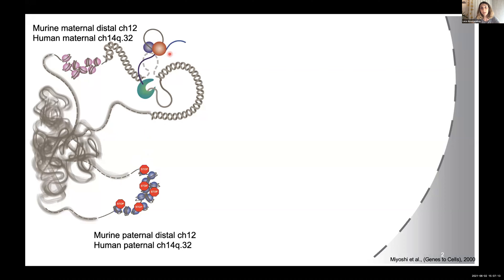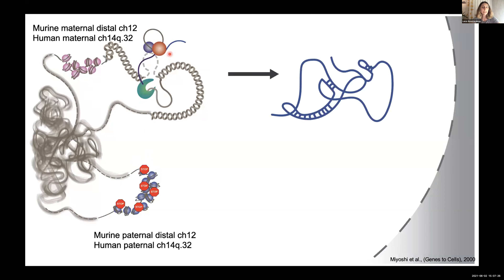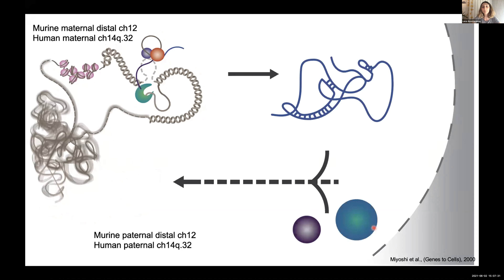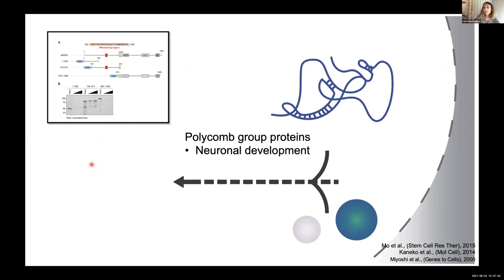Upon transcription, MEG3 becomes spliced and has many different splicing isoforms, which I will discuss further during my talk. Apart from splicing, MEG3 also becomes polyadenylated and is retained in the nucleus, where it can form contacts with different proteins. As ribonucleoprotein complexes, it acts on the genome in trans to regulate the expression of other genes.